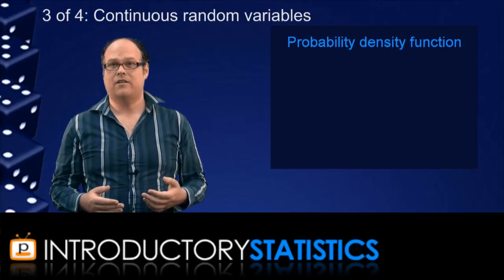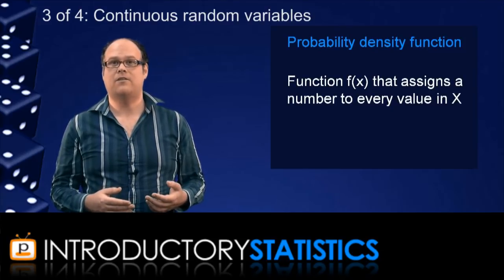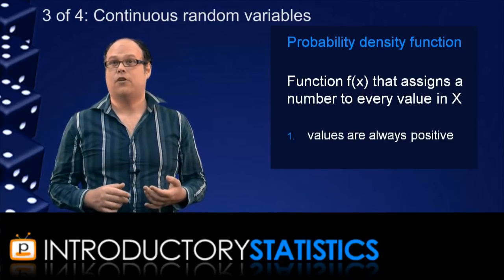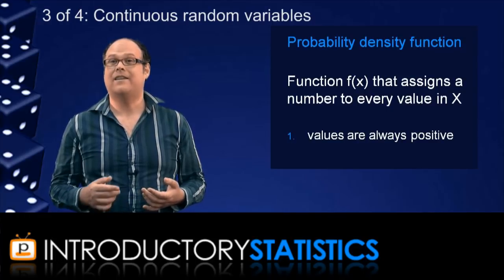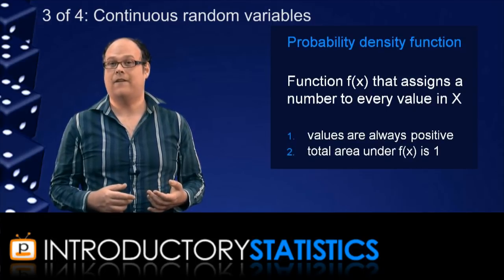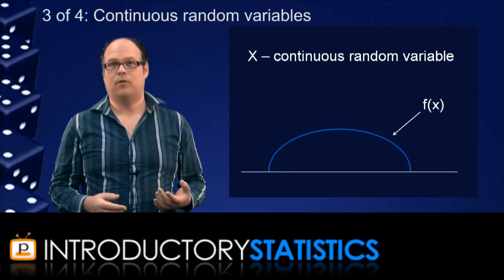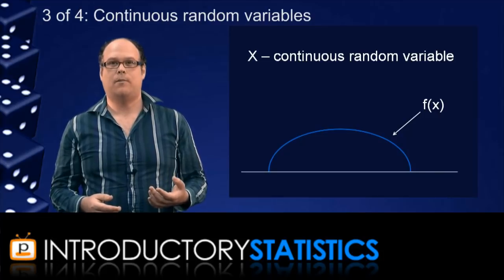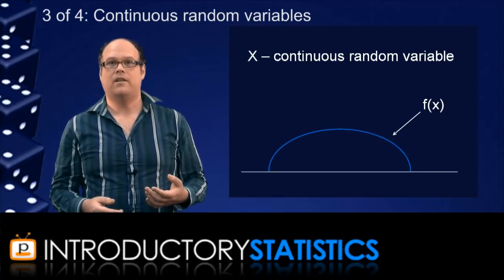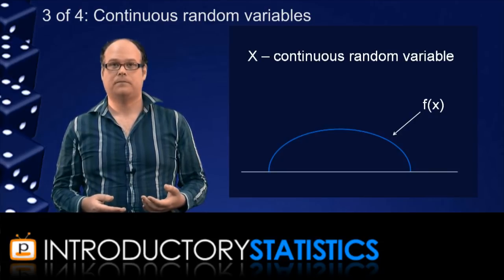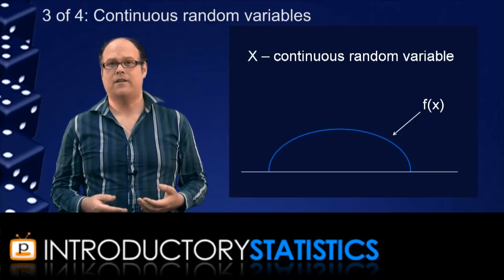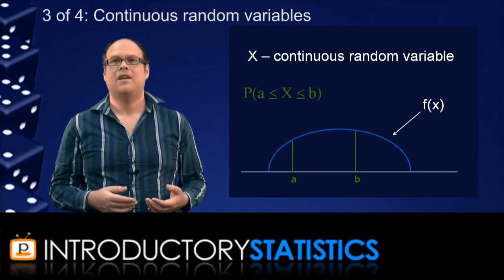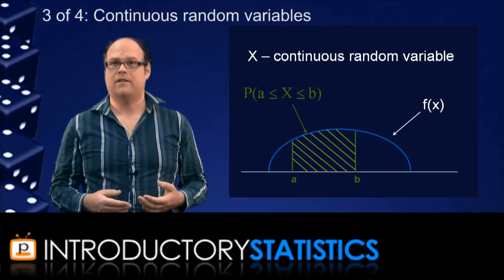A probability density function is a function f that assigns values to a continuous random variable x such that, firstly, the values are always positive so the curve f is always above the x-axis and secondly, the total area underneath the curve f is always 1. Here's an example of what a probability density function might look like for a continuous random variable. Once we've assigned a probability density function then we can talk about probabilities with continuous random variables by using the following rule. Given two different values a and b for x, the probability that x will assume some value between a and b is equal to the area under the curve f between a and b.